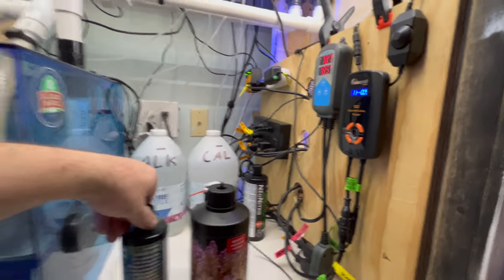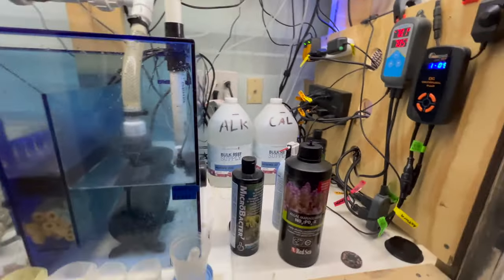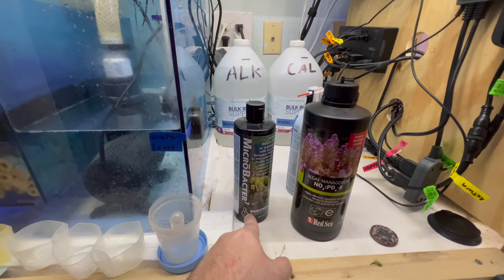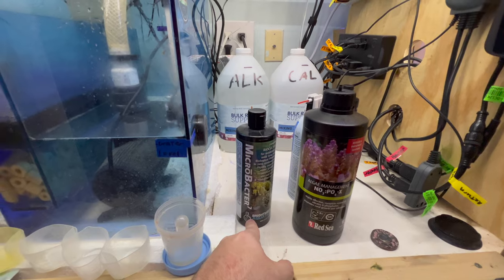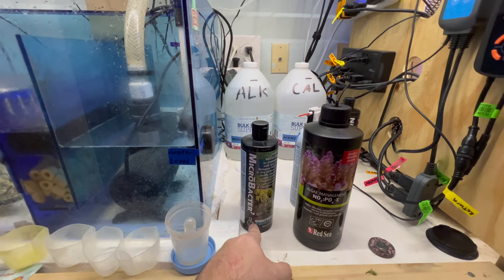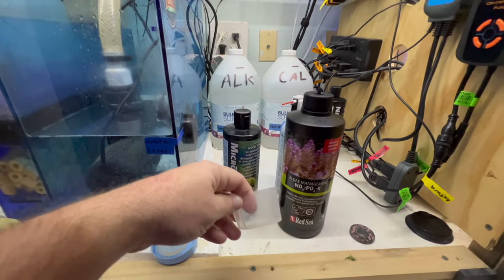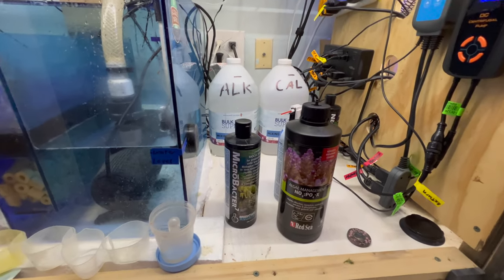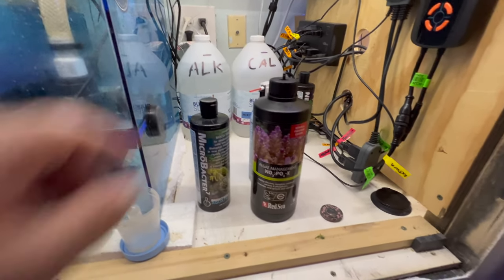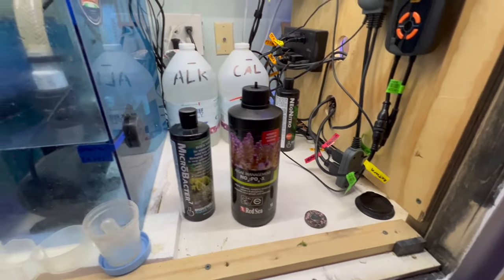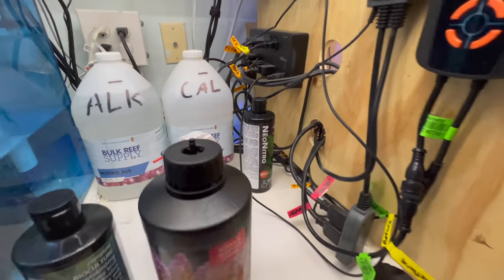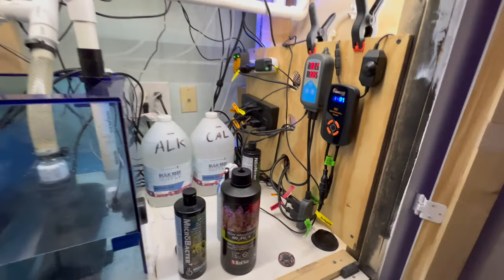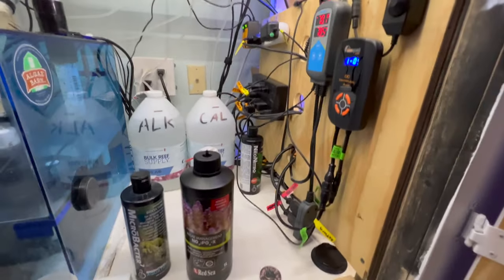And these are the things I dose on water change day. After water change I do Microbacter7. Directions say 50 milliliters, I actually add a cup, a cup and a half so that's about 75 milliliters and keep the skimmer off for four hours. The Neo Nitro is in here. I haven't dosed that in absolutely months. No need to dose that.